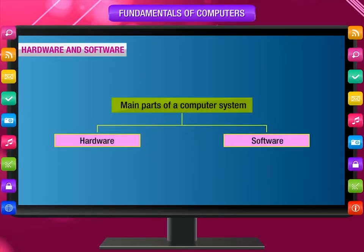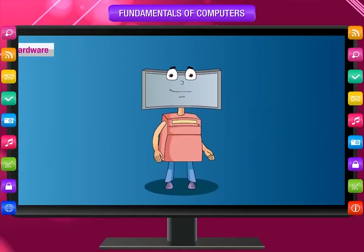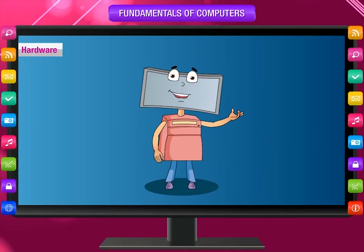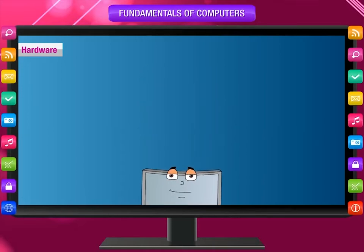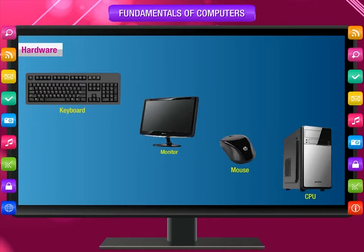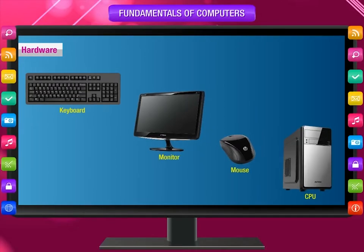There are two main parts of a computer system: hardware and software. The physical parts of a computer are called hardware — any part that you can see and touch. The important hardware parts of a computer system are the keyboard, monitor, mouse, and CPU.